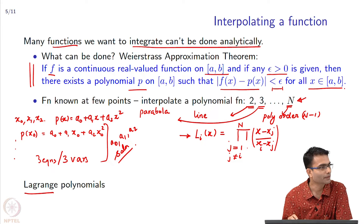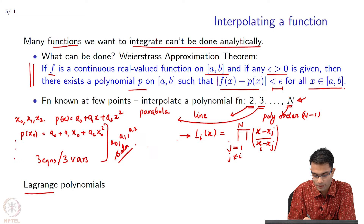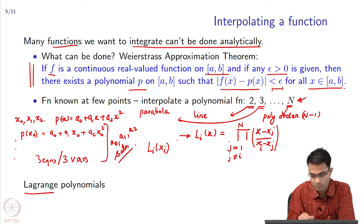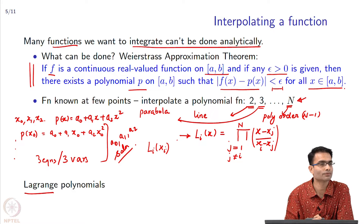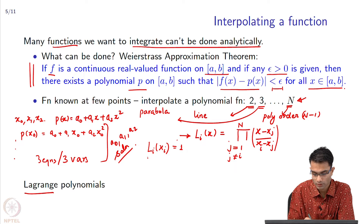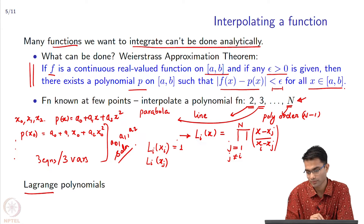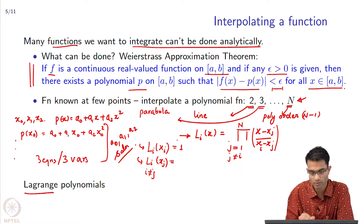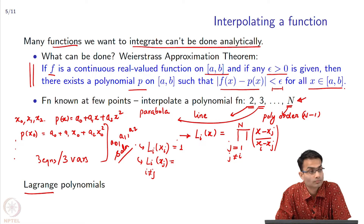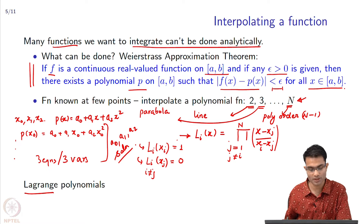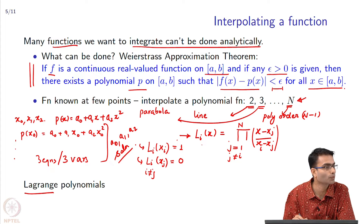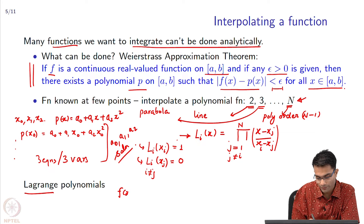This function looks quite interesting. If I ask you what is the value of L i of x i, each term cancels off and the value is 1. And L i of x j, where i is not equal to j, the value is 0. So using this so-called Lagrange polynomial, can I write f in a particular form? Let us look at that.